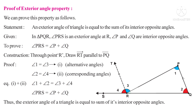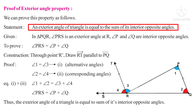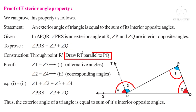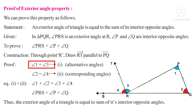Now we can prove this property. Statement: an exterior angle of a triangle is equal to the sum of its interior opposite angles. Given that in triangle PQR, angle PRS is an exterior angle, and angle P and angle Q are the interior opposite angles. To prove: angle PRS is equal to angle P plus angle Q. We construct a line parallel to PQ, that is RT.